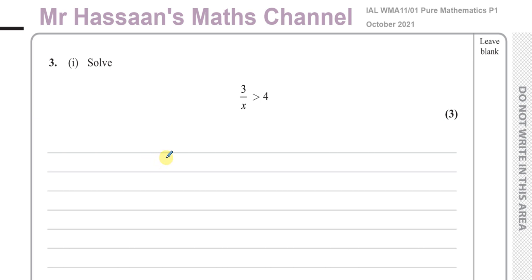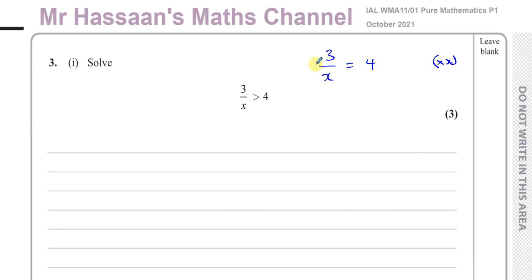Question 3 part 1 tells us to solve this inequality: 3 over x is greater than 4. Now, if this was just an equation, we would get rid of the fraction by multiplying both sides by the LCM of the denominator, which is x. We multiply both sides by x and we're left with 3 equals 4x, then divide both sides by 4 to end up with x equals 3 quarters.